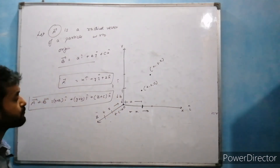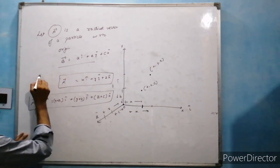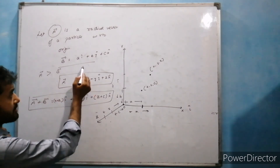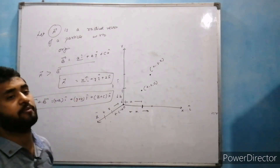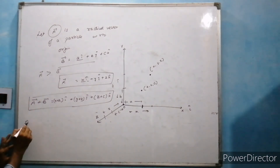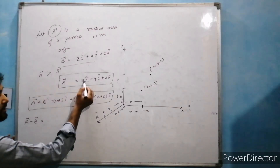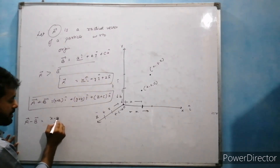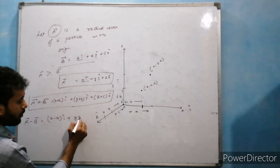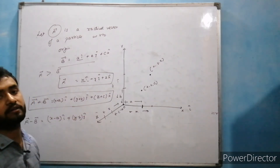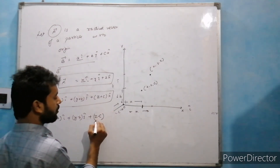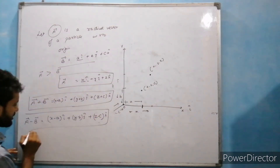अब subtraction of two vectors: मान लीजिए बड़ा vector a है और छोटा vector b है। Same axis में से same axis को subtract कर सकते हैं। तो a vector minus b vector = (x-a)i + (y-b)j + (z-c)k। यह है representation of subtraction of two vectors।